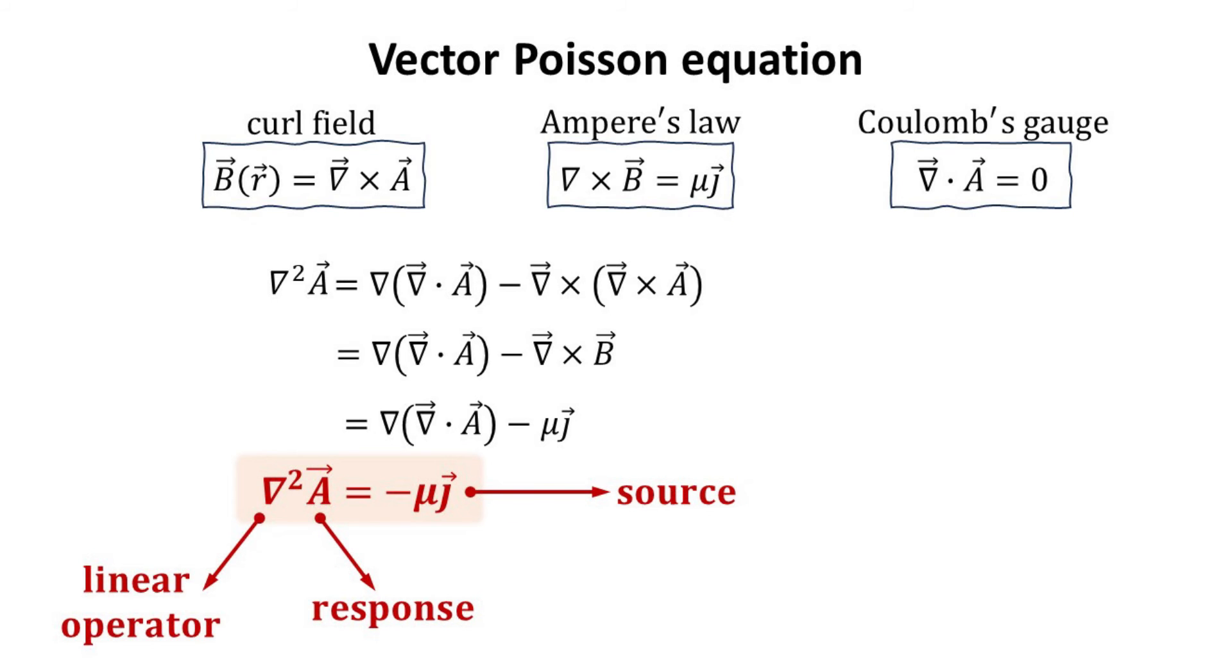Thus, we can arrive at the expression for the vector potential A if we know the Green's function of the linear operator, which in this case is just the Laplacian.